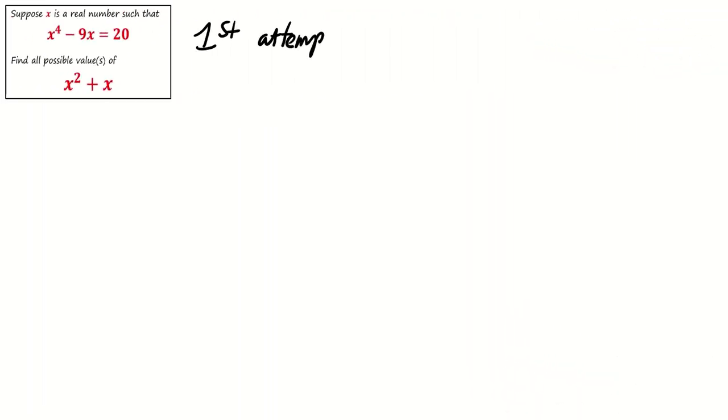Let's dive into our first attempt, where many of you might use a similar approach. We start by letting x^2 + x be a. Then we express x^2 as a - x.